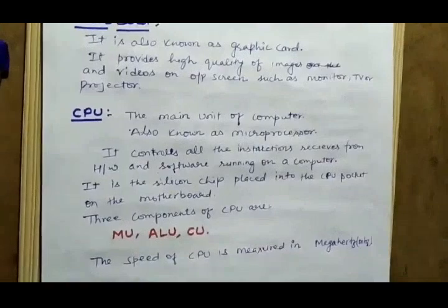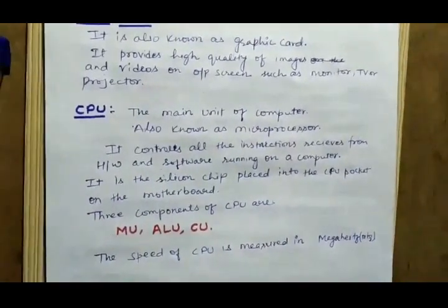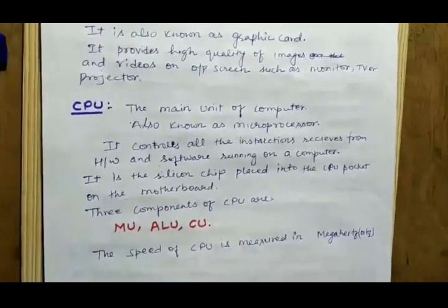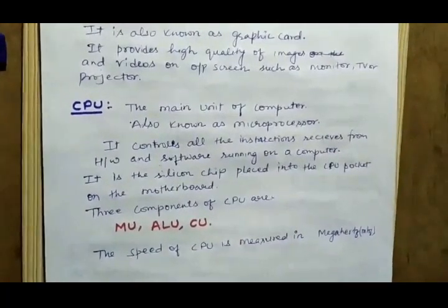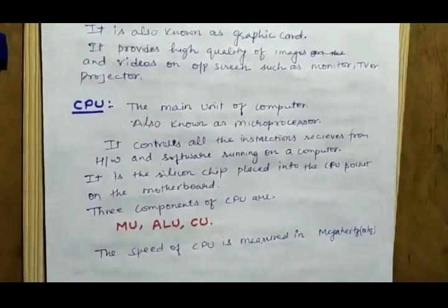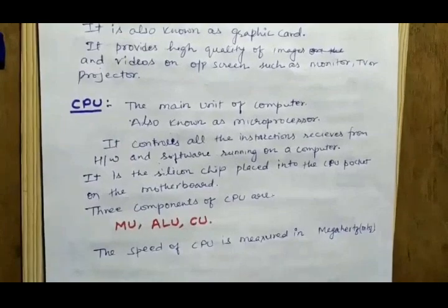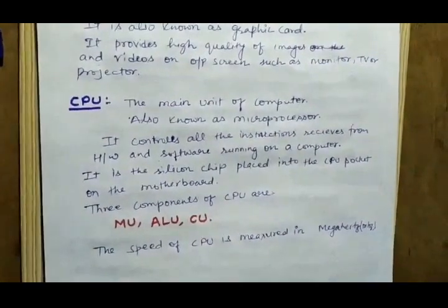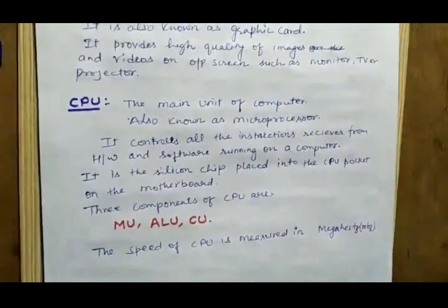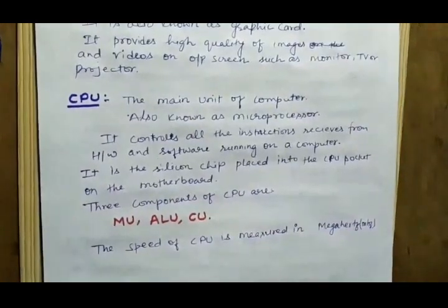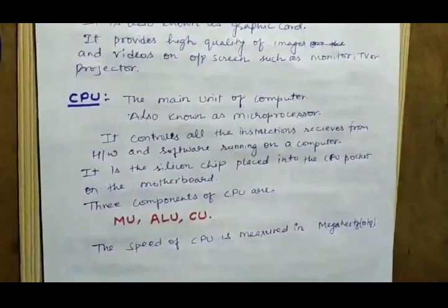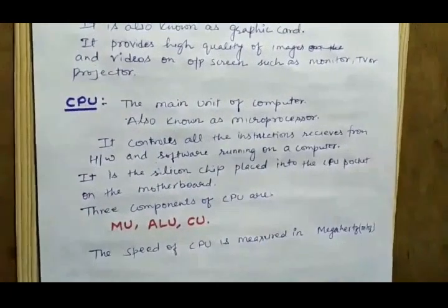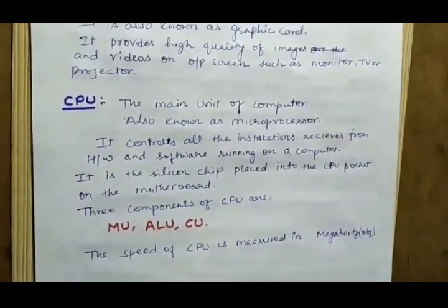The next component is the CPU — Central Processing Unit. CPU is also known as a microprocessor and the brain of the computer. It controls all instructions received from hardware and software running on a computer. The metal used for making the CPU chip is silicon. The three components of CPU are: MU (Memory Unit), ALU (Arithmetic Logic Unit), and CU (Control Unit). The Memory Unit stores data entered by the user. The ALU performs mathematical operations like addition, subtraction, multiplication, and division, as well as logical operations.